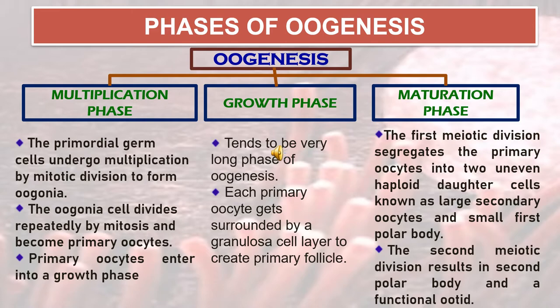In the growth phase, which tends to be a very long phase of oogenesis, the primary oocyte gets surrounded by a granulosa cell layer to create primary follicles.